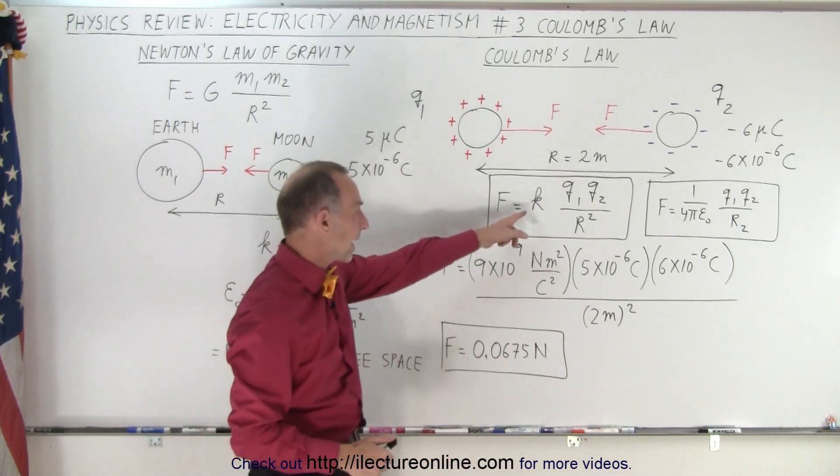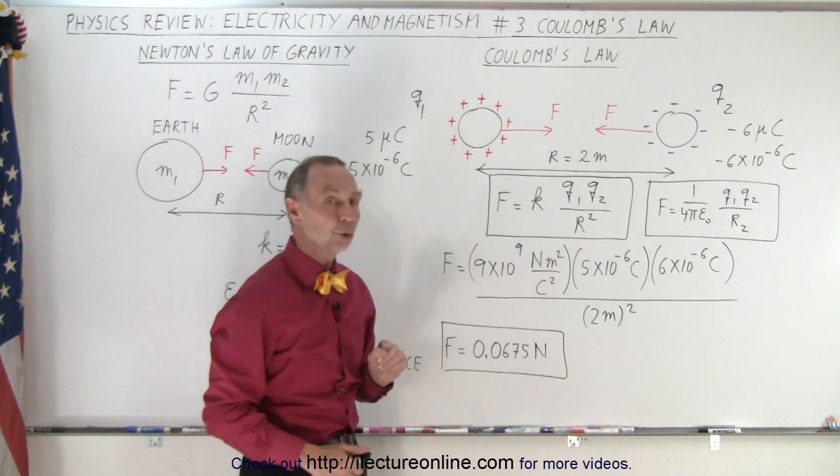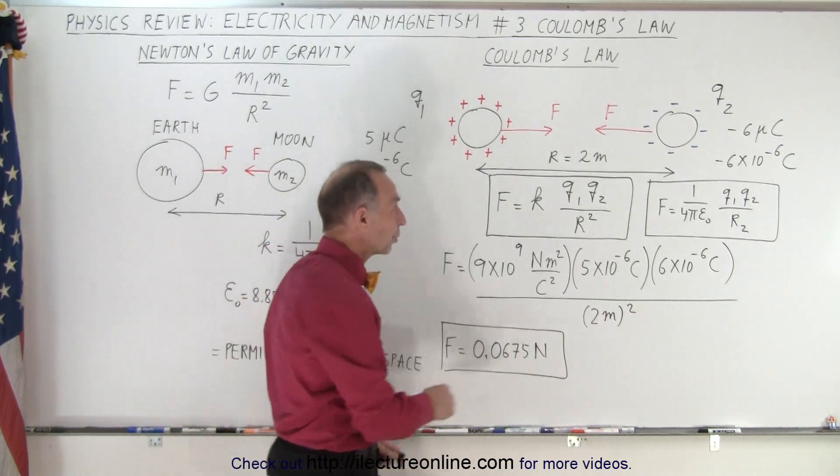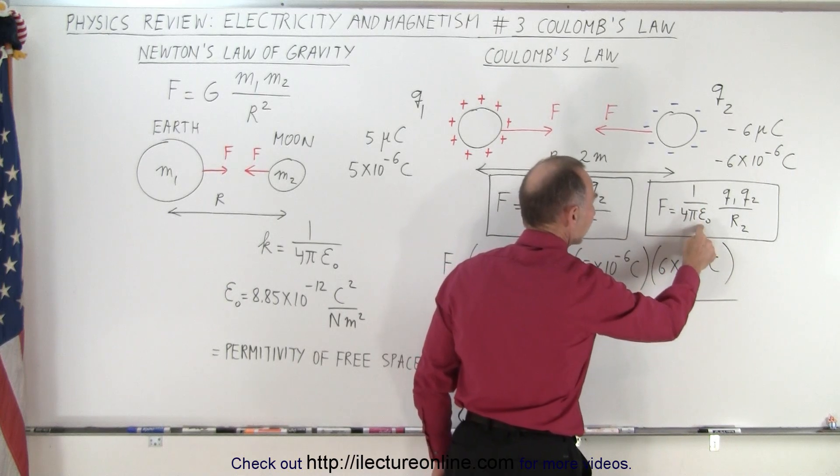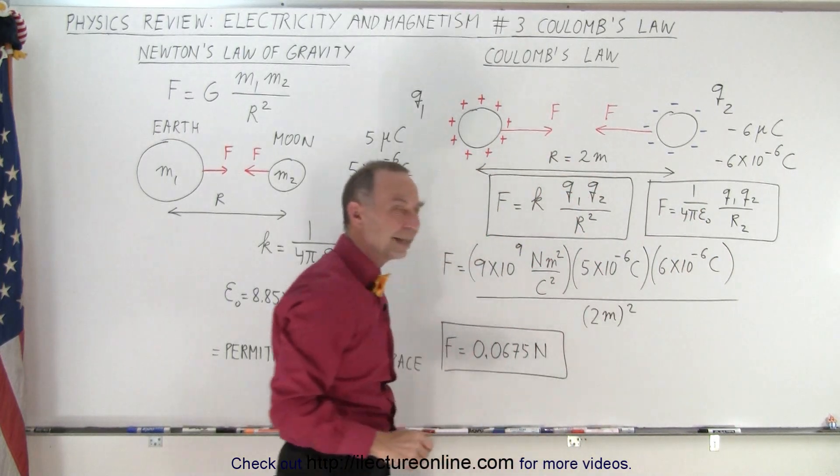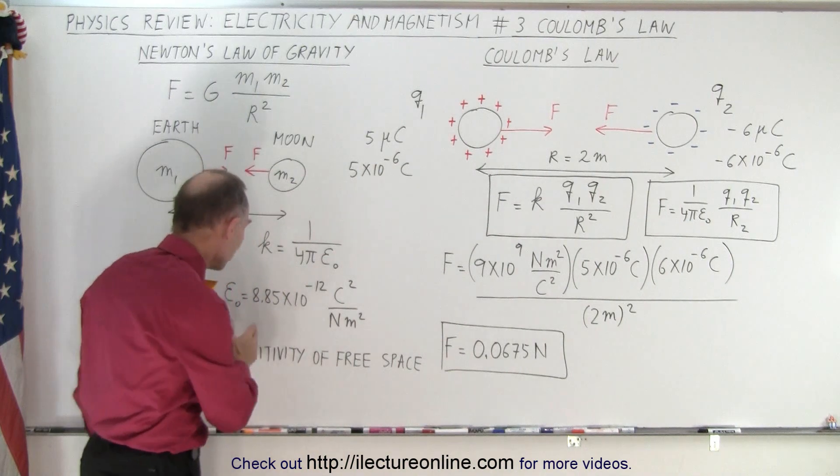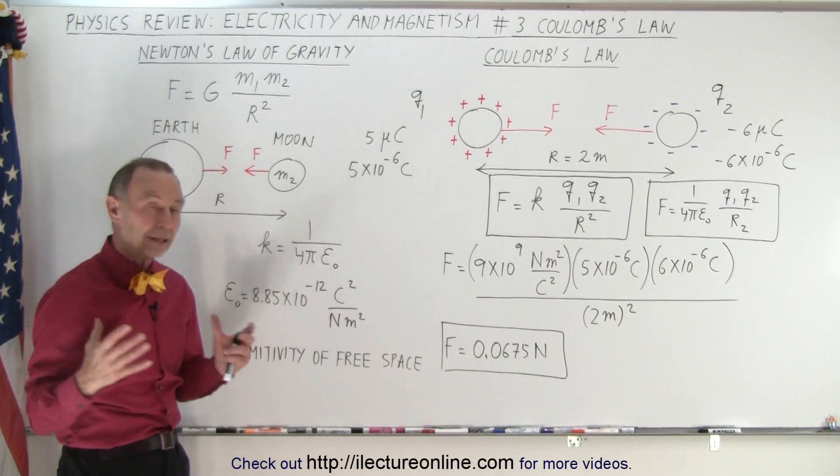Notice the units for K is Newton meter squared per Coulomb squared. But sometimes the equation is written like this. Instead of K, we write 1 over 4 pi epsilon sub-naught. Now this epsilon sub-naught is known as the permittivity of free space, and we'll talk about that later.